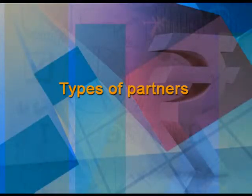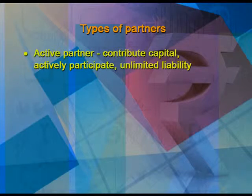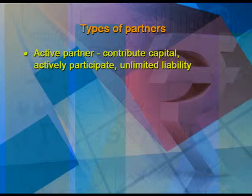Now let us move to the types of partners. The first is an active partner — as the name suggests, these partners contribute capital, actively participate in decision making, and bear unlimited liability. The second is a sleeping partner — they contribute capital but do not participate in decision making, though they also bear unlimited liability.